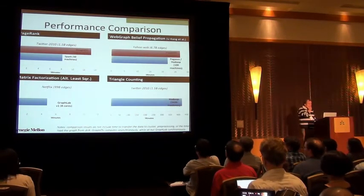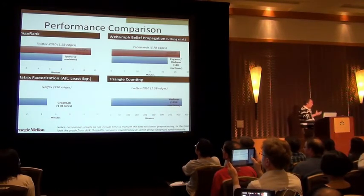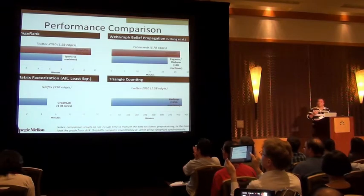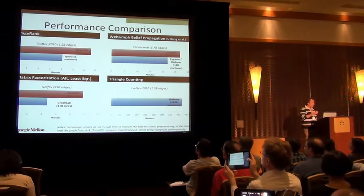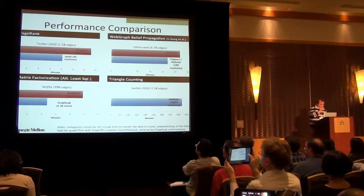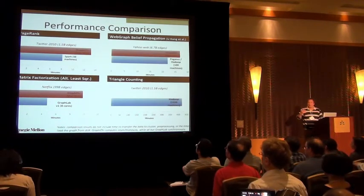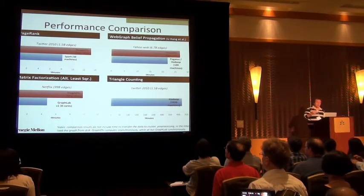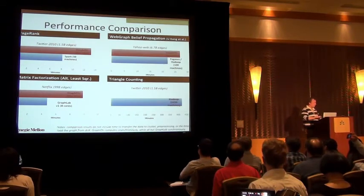Then, to look at the overhead of the disk computation, I compared GraphChi to GraphLab, version number one, which was a shared memory system. And it was running on eight cores. And in that case, GraphLab was about twice as fast as GraphChi. So this shows that if the computational complexity is quite high, then the overhead of the disk operations is not that bad at all.